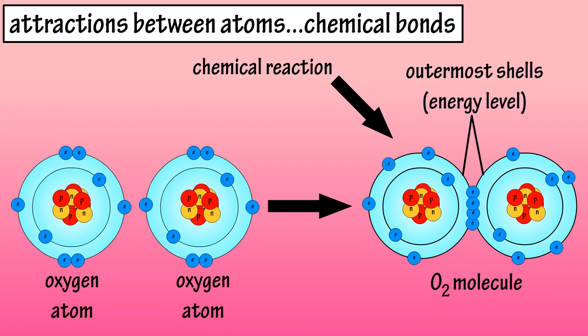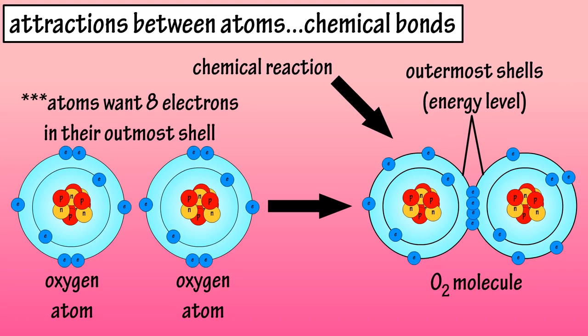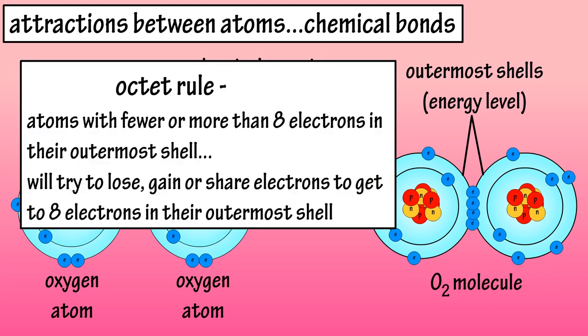In atoms that have fewer or more than eight electrons in their outermost energy level, reactions occur that result in the loss, gain, or sharing of electrons with another atom to satisfy the octet rule. The octet rule means that elements tend to combine so that each atom has eight electrons in its outermost shell. This results in the formation of structures such as crystals or molecules.